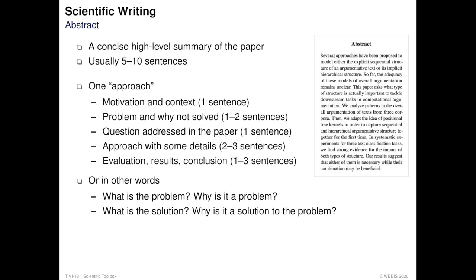The first part of any paper is the abstract. It provides a very short but sufficient summary of the high-level structure of the paper. An abstract is usually between 5 and 10 sentences long. One approach is to allocate a special function to each sentence. The first sentence should be about the motivation and the context of the paper — describe where this paper is situated in the larger body of work that already exists for this topic.